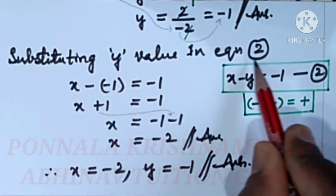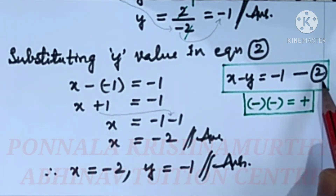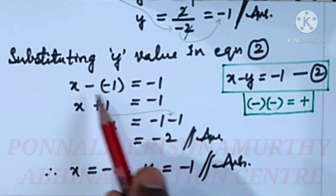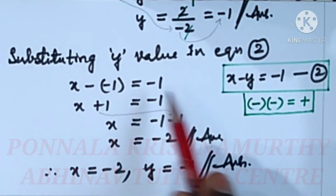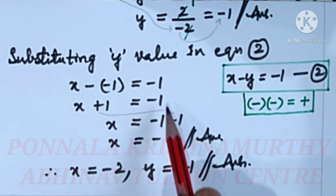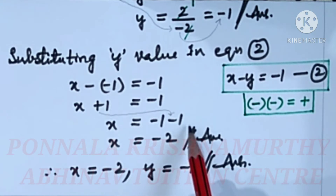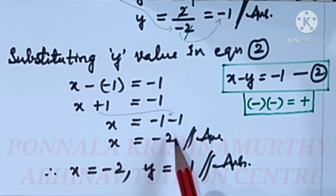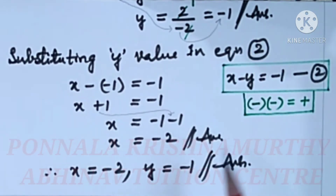Substituting y value in equation 2. Equation 2 is x minus y equal to minus 1. In place of y, substitute minus 1: x minus (minus 1) equal to minus 1. Minus into minus is plus, so x plus 1 equal to minus 1. x is equal to minus 1 minus 1. Same sign, addition: x is equal to minus 2.